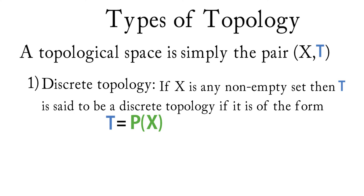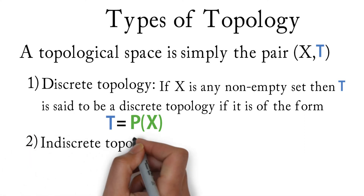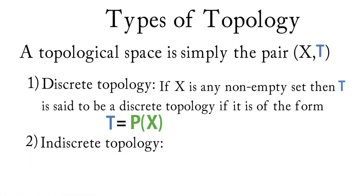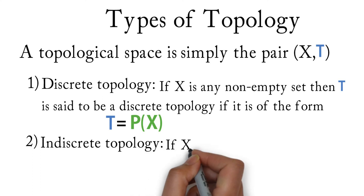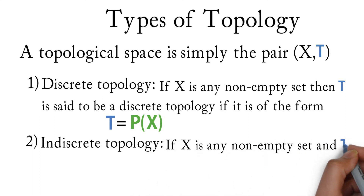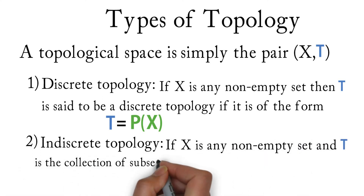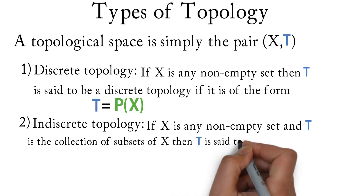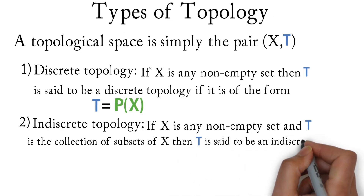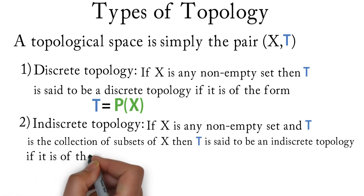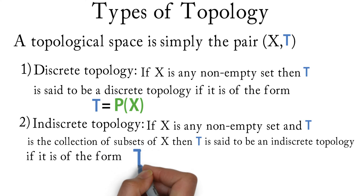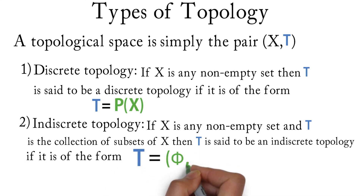Number 2 is the indiscrete topology. If X is any non-empty set and tau is a collection of subsets of X, then tau is said to be an indiscrete topology if it is of the form tau containing only the empty set and the entire set X.